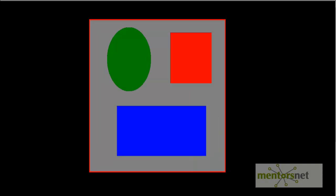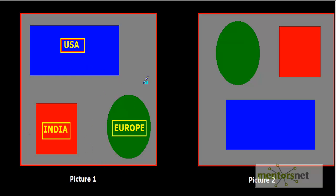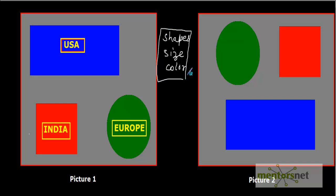Your time is up. This is the second picture. Now identify the name of the countries written on each shape. I'm sure most of you would have successfully identified the names. This is because when the first picture was shown to you, your brain tried to learn various properties — like shapes, size, or color. When the second picture is shown, even though the position of objects changed, by comparing the properties you learned earlier, you are able to identify the countries.